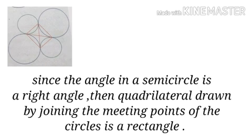Since the angle in a semicircle is a right angle, then the quadrilateral drawn by joining the meeting points of the circles is a rectangle. So the given quadrilateral is a rectangle.